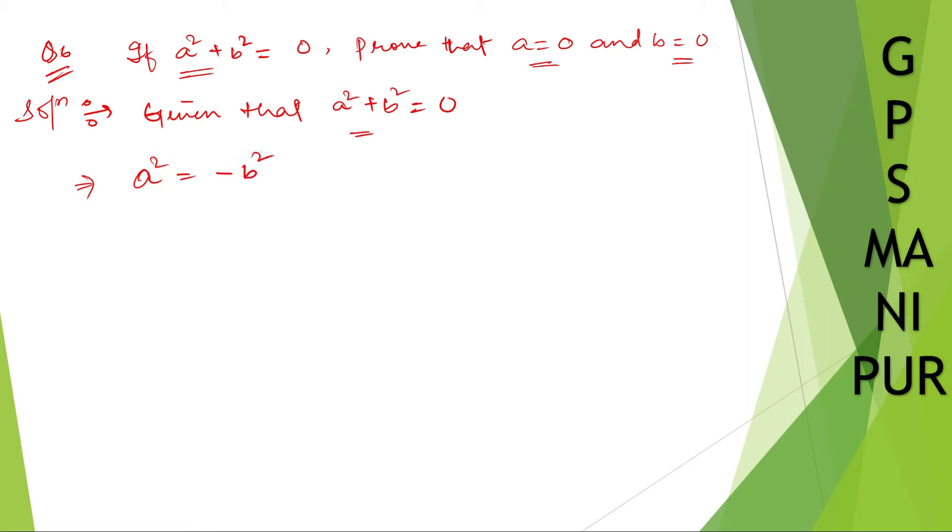Now the main thing: tell me any number whose square is equal to a negative number. There are no such numbers.